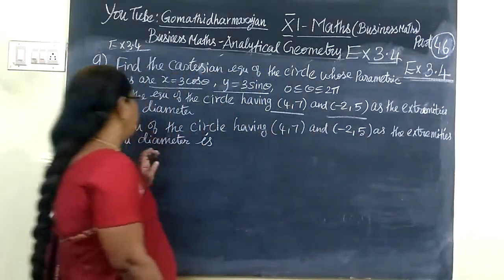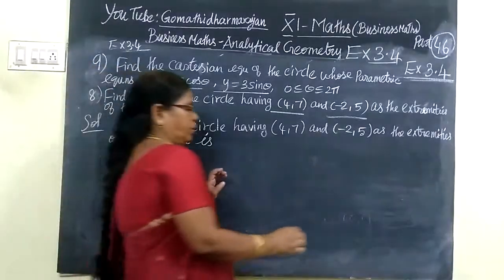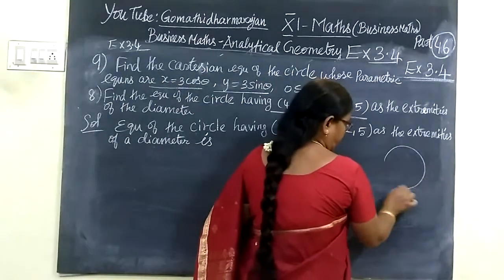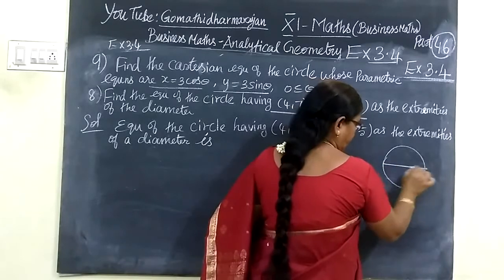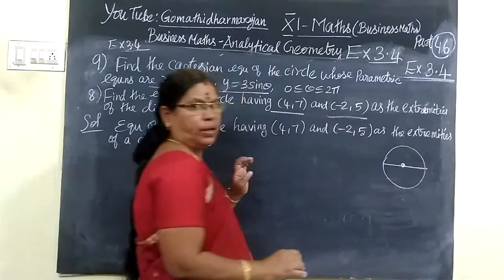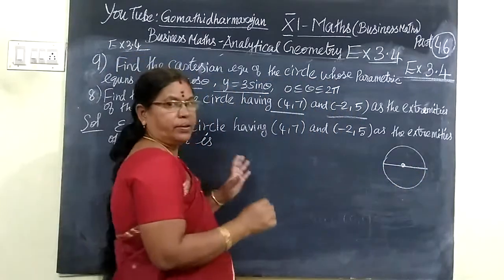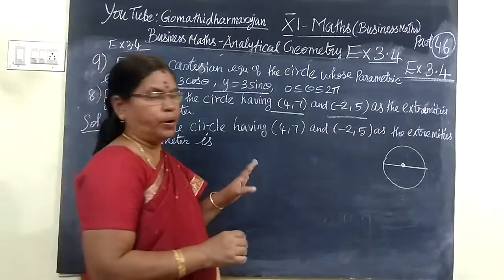This is the extremities of the diameter. This is the diameter. Diameter means it is passing through the circle. This is the extremities. Extremities are the end points.